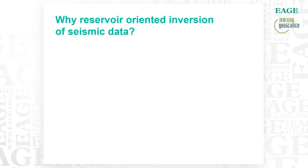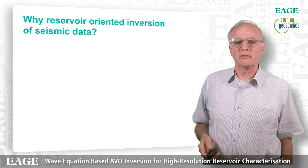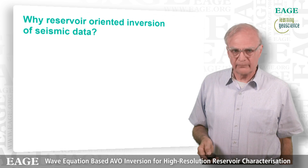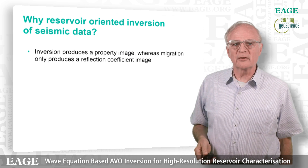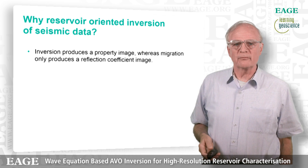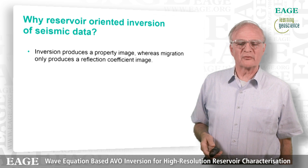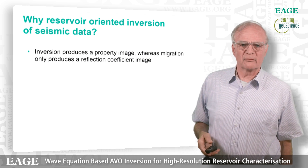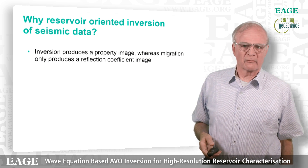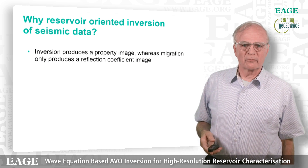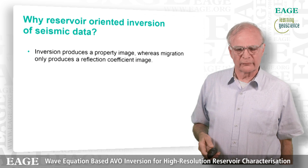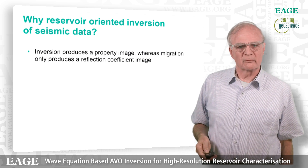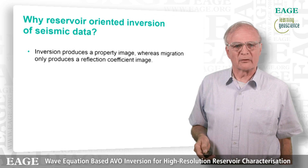First, we answer the question: why would we be interested in doing reservoir-oriented inversion of seismic data? Well, naturally, inversion produces property images, whereas migration only produces a reflection coefficient image. So if you want to know the reservoir properties, you would have to go to inversion. If you're only interested in the structure, you can look at your migrated data.